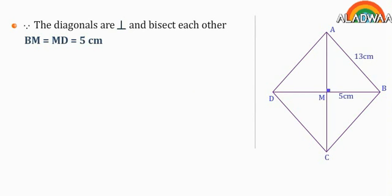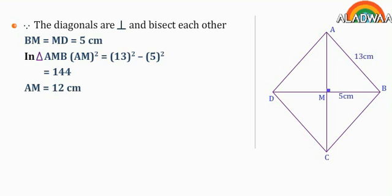In triangle AMB, AM squared equals 13 squared minus 5 squared equals 144. Then AM equals 12 cm.